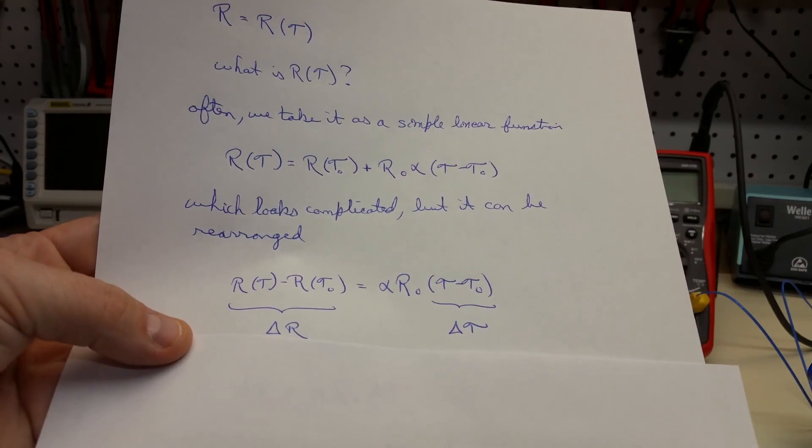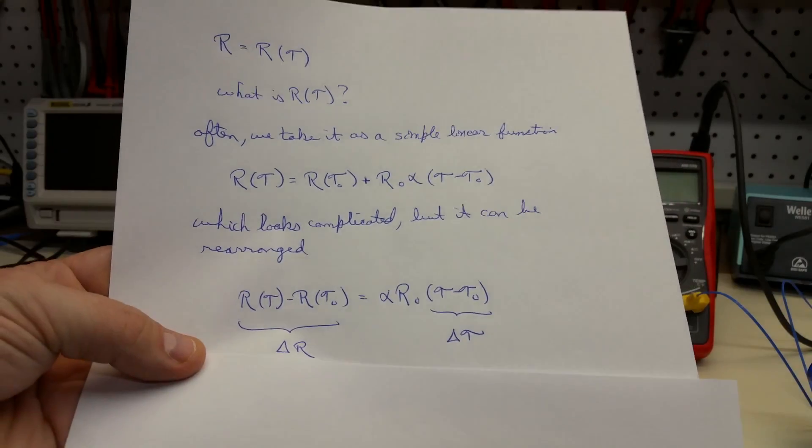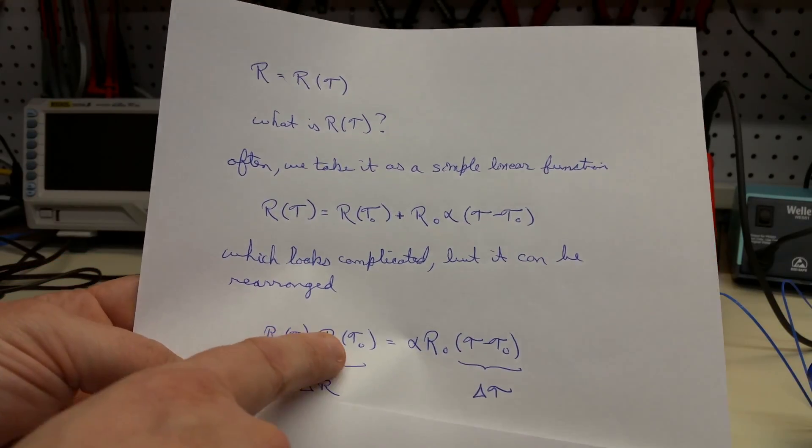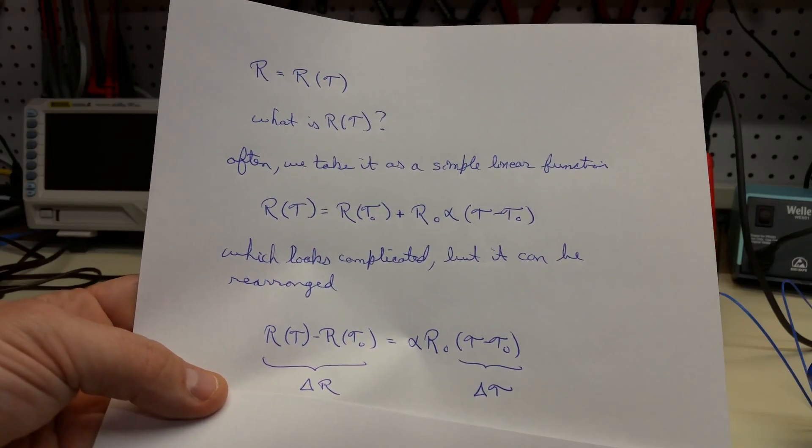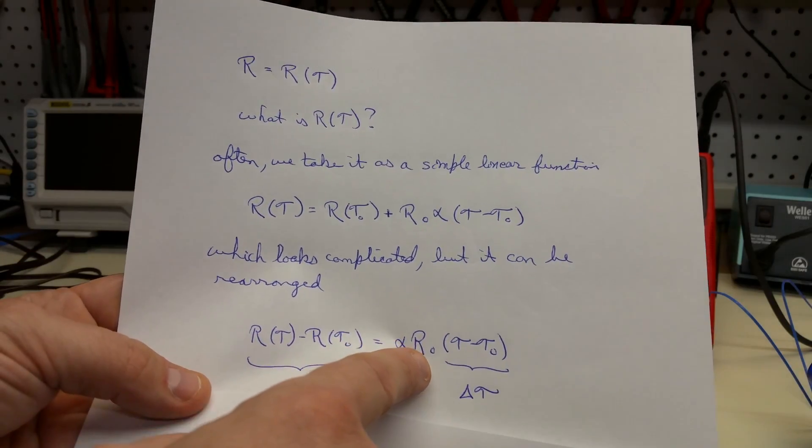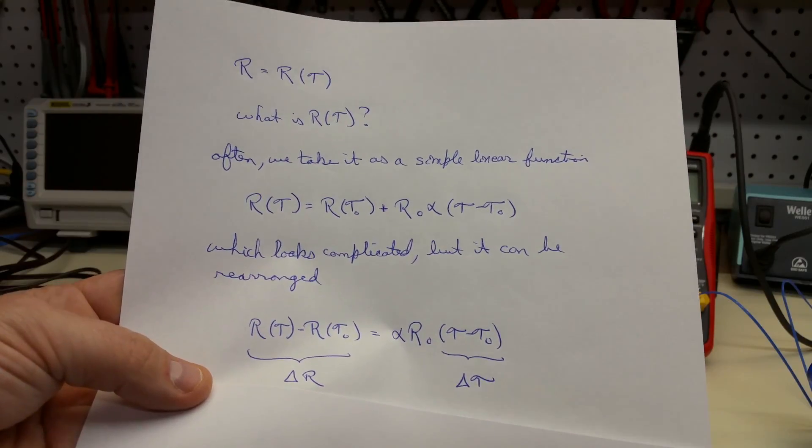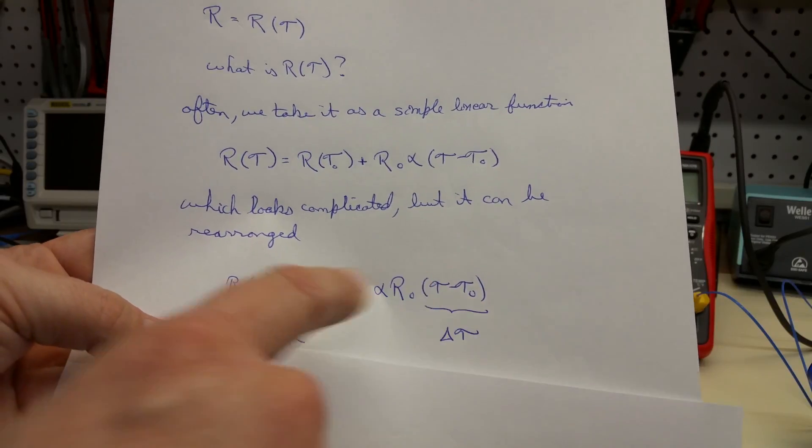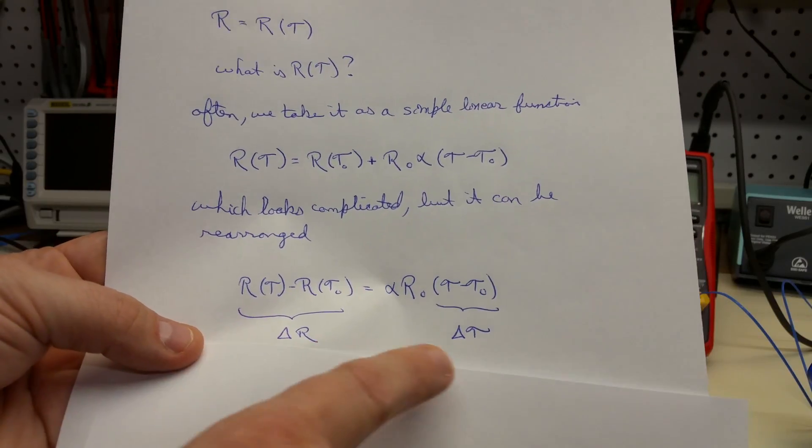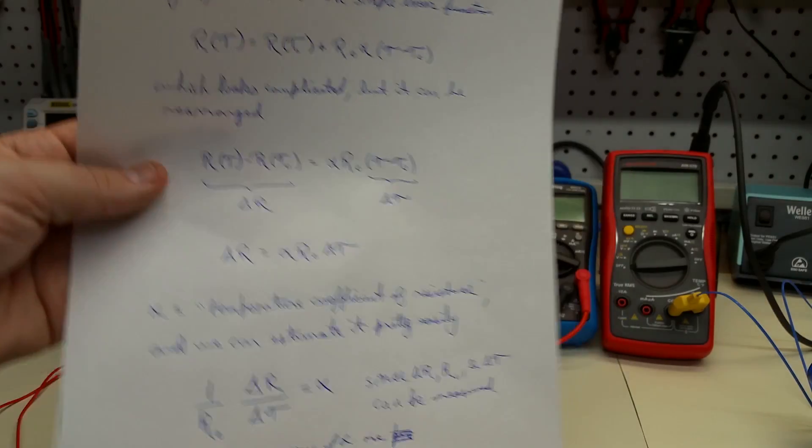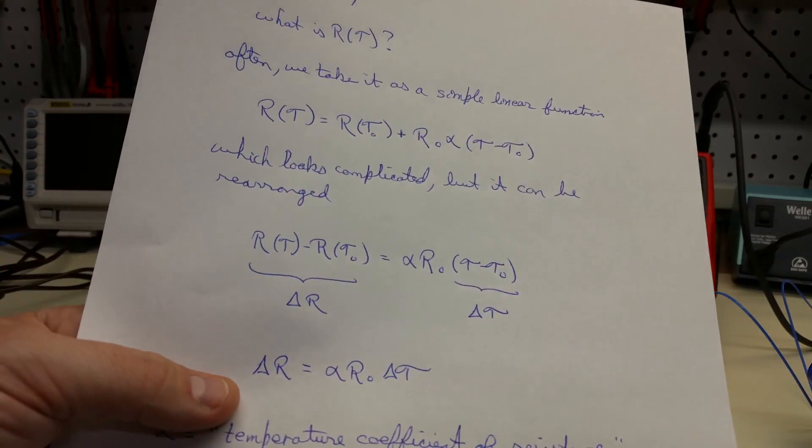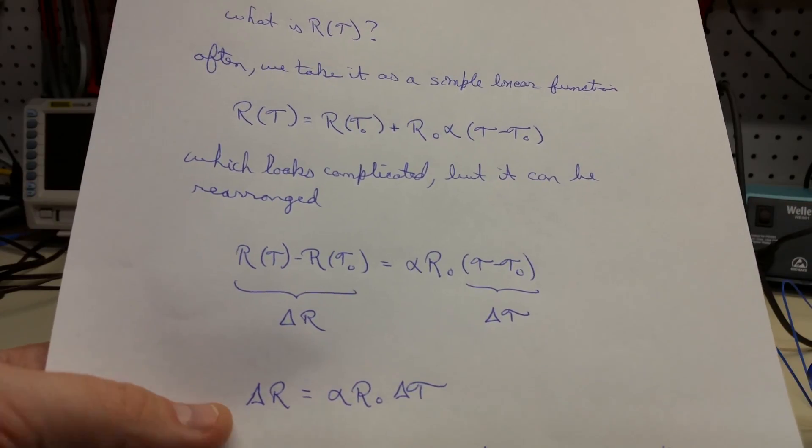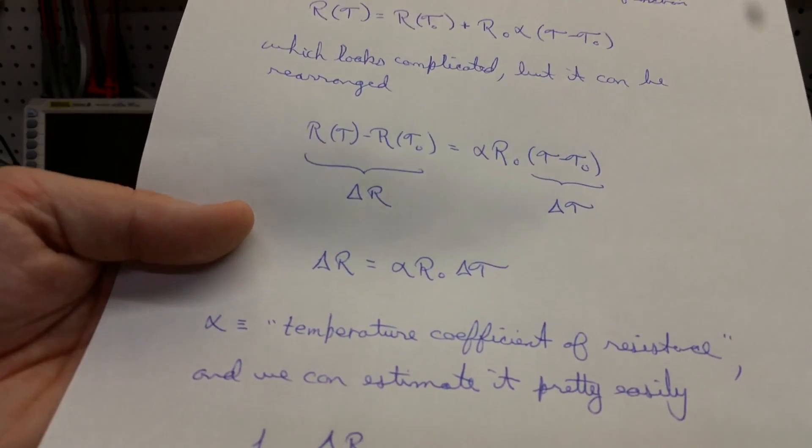And we can rearrange it like this, just doing some simple algebra. So we have R at the temperature that we want to know the resistance at, minus the resistance at the initial temperature, equals alpha times the resistance at the initial temperature times the difference in temperature. And if we rewrite these differences in resistance and differences in temperature as delta R and delta T, then we can rewrite this as delta R equals alpha R naught, or R at T zero, times delta T.